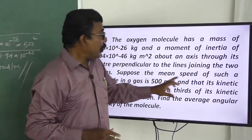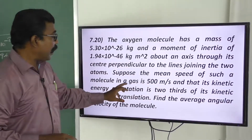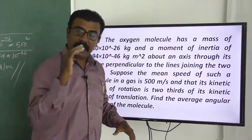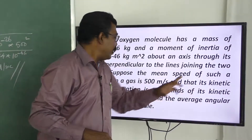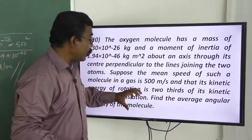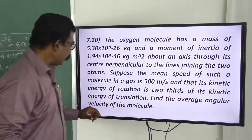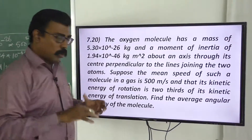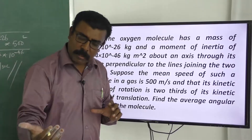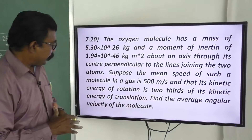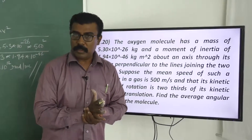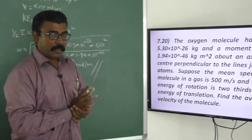Suppose the mean speed of such a molecule in a gas is 500 meters per second. We are given that its kinetic energy of rotation is two-thirds of its kinetic energy of translation. We need to find the average angular velocity of the molecule.